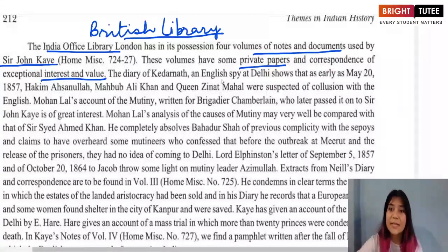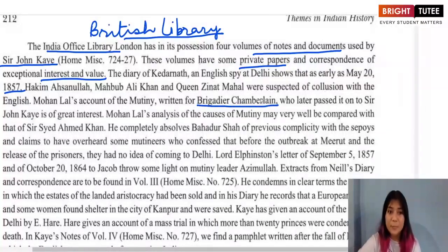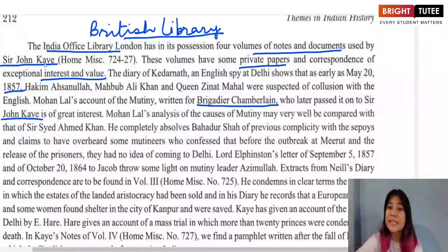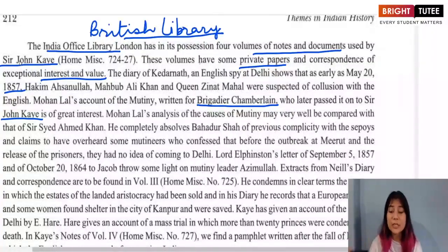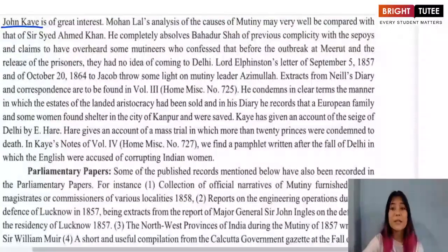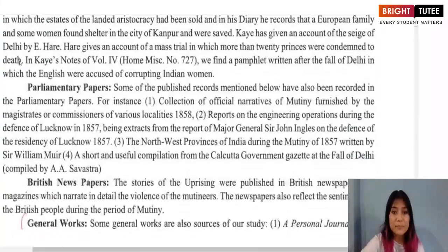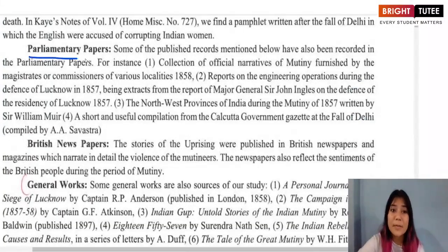The diary of Katharnath, an English spy at Delhi, shows accounts from as early as 20th May 1857. There are also accounts written by Brigadier Chamberlain, which were passed to Sir John Kaye. The notes and documents in the British Library give a picture of different events during the revolt, such as the Siege of Delhi, and the experiences of British officers who fought the Indians during the rebellion.